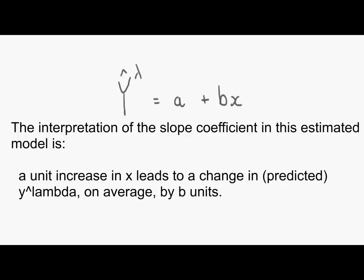Consider this estimated model. The interpretation of the slope coefficient in this estimated model is a unit increase in x leads to a change in Y to the lambda on average by b units. And we can use them all to predict the transformed Y given an x. There are two things to note here.